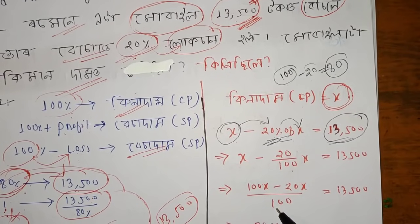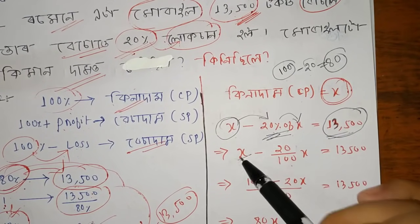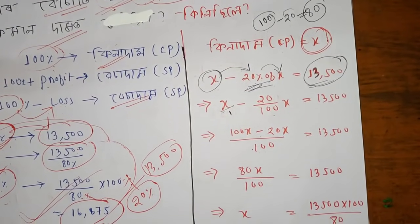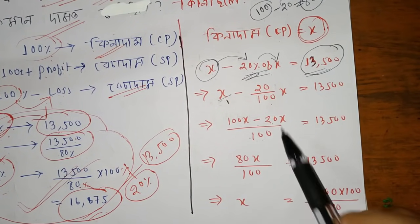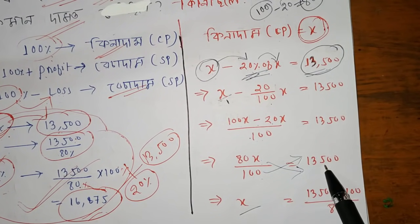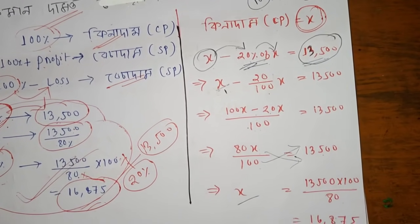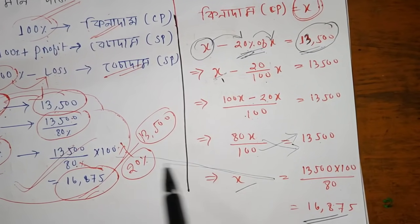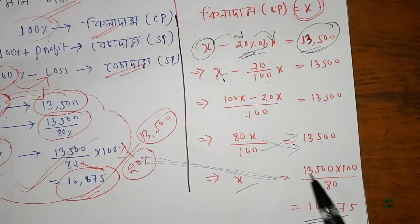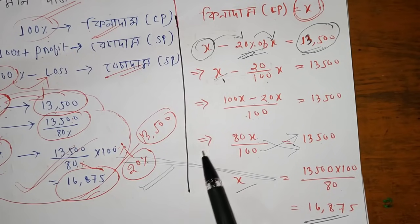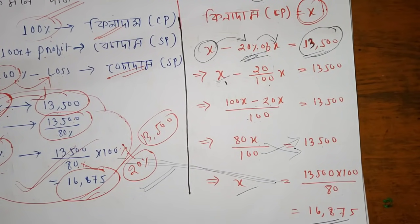We write our LCM. If we write a statement, we have to write it about 100x minus 20x. We have to cross multiply and we get 100 times 13,500 divided by 80. So we have to write a statement about 80x. Now it is 13,500 divided by 80. We have to solve the percentage because we have to repeat the question, as it is important.